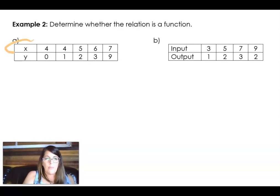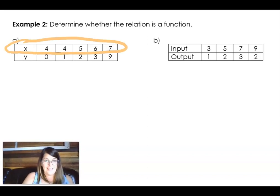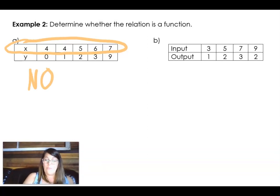So let's look at this. Remember the song? We can say to ourselves, it's all about the X, all about the X, no Y. So start by looking at the X's. Are there any repeats in the X's? There are. So this machine, one time you put a 4 and it gives you a 0. One time you put a 4 and it gives you a 1. That means, no, this is not a function because every input, every X, doesn't have a unique output.